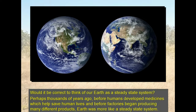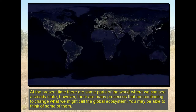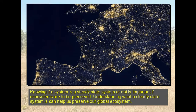Would it be correct to think of our Earth as a steady state system? Perhaps thousands of years ago, before humans developed medicines and before factories began producing many different products, Earth was like a steady state system. At the present time there are some parts of the world where we can see a steady state, but many processes continue to change what we might call the global ecosystem. Knowing whether a system is a steady state system or not is important if ecosystems are to be preserved — understanding steady state systems can help us preserve our global ecosystem.